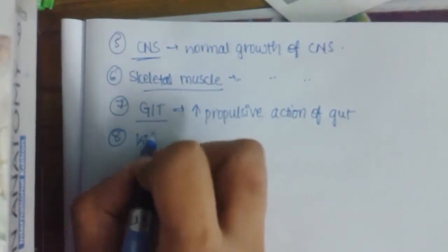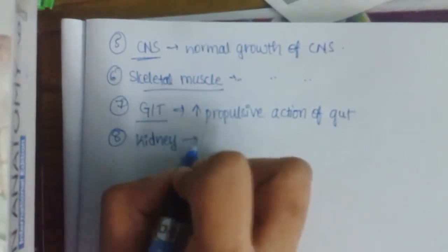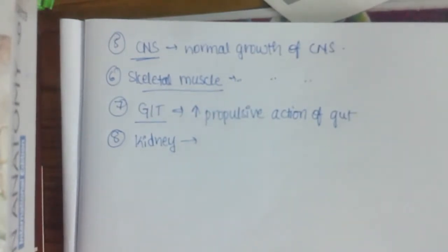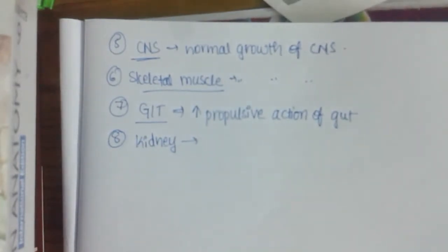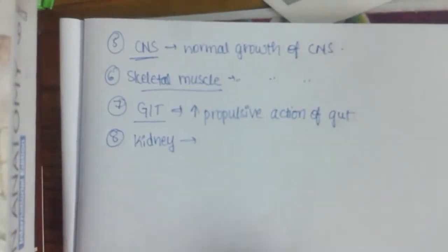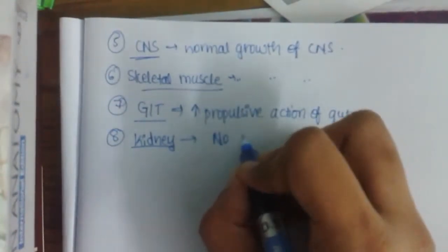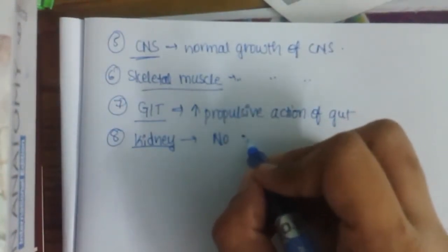The eighth action is on the kidney. Thyroid hormone does not cause any diuresis in normal individuals, but it may increase urine flow only when edematous patients are treated with it. So there is no diuresis in normal individuals.